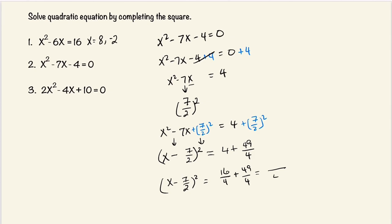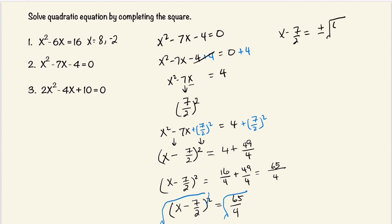Now this is equal to 65 over 4. And now we can take the square root of both sides. This will cancel, and we get x minus 7 halves is equal to plus or minus the square root of 65 over the square root of 4, which is equal to plus or minus the square root of 65 over 2.